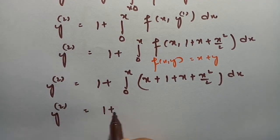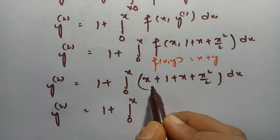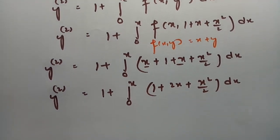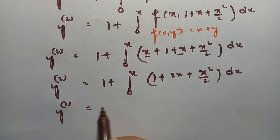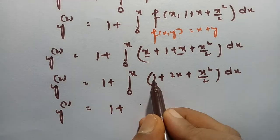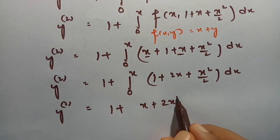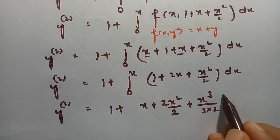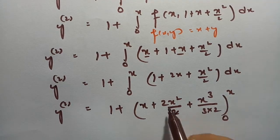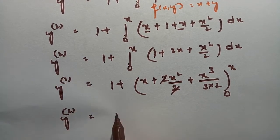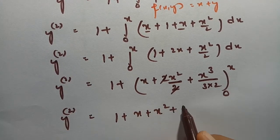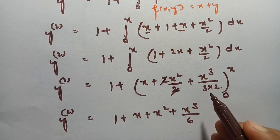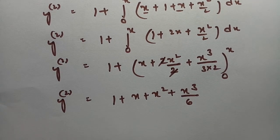Integrating, y₂ = 1 + [x + x² + x³/6] from 0 to x. Therefore the second approximation is y₂ = 1 + x + x² + x³/6.